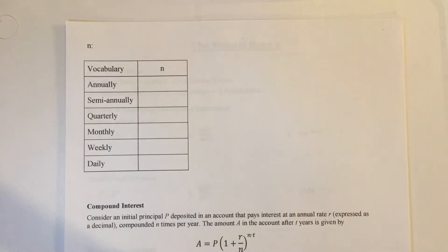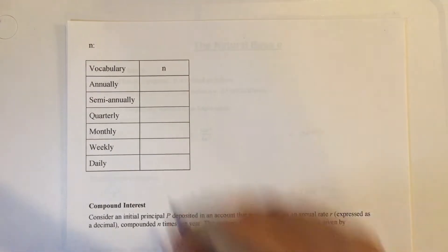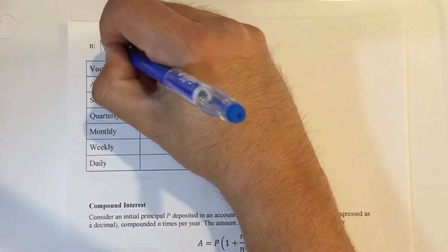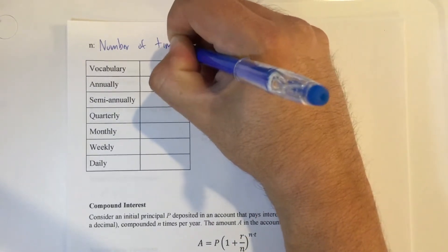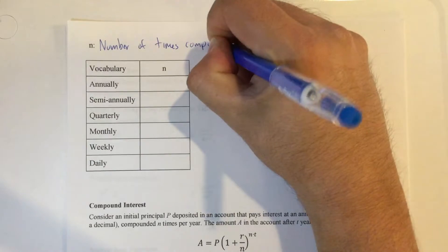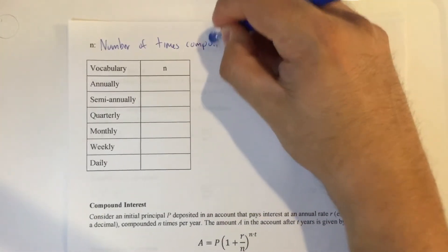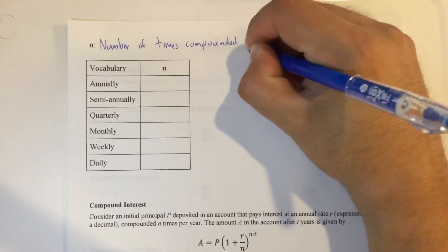Last thing we'll talk about is compound interest. We're going to start with the letter N. N is going to be the number of times it's compounded per year.